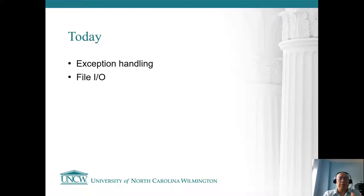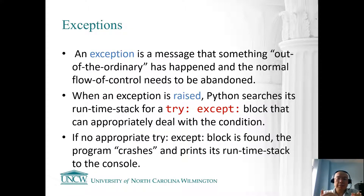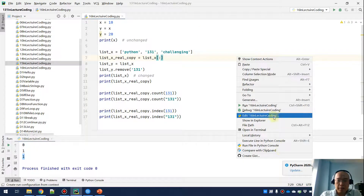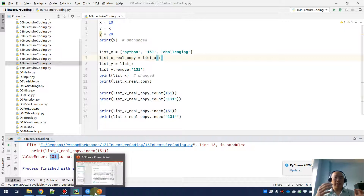Let's come back to today's topic: exception handling and file I/O. We see exceptions every day — we usually call them error messages. An exception happens when Python doesn't know how to handle a certain case, for example a syntax error or a runtime error. Just now we saw a ValueError saying '131 is not in the list' — that is an exception. Usually we just let it happen and use the error message to figure out what's wrong.